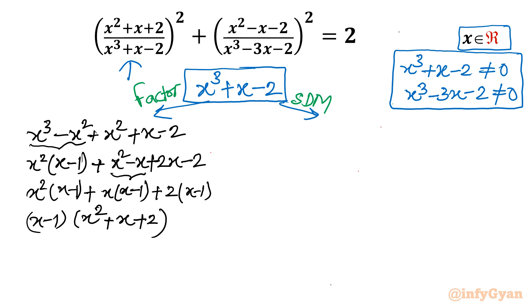You can see the numerator is x² + x + 2, which is the same as the factor. So the equation was actually simpler than it looked.